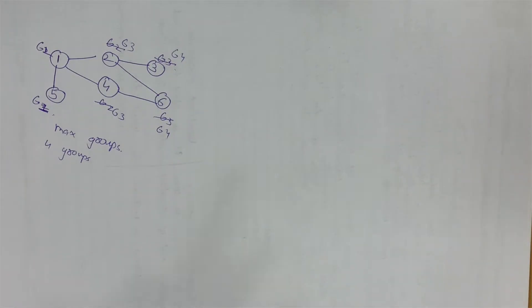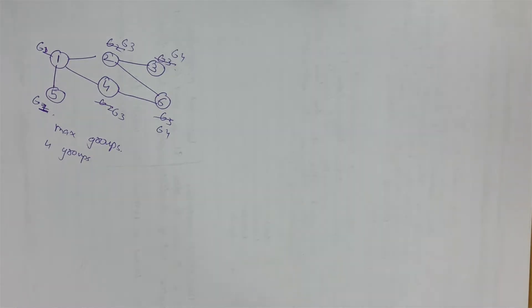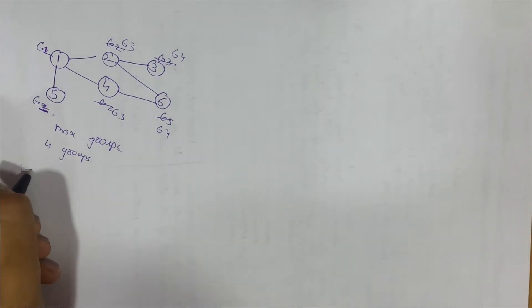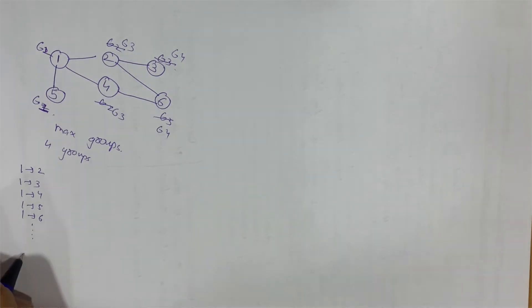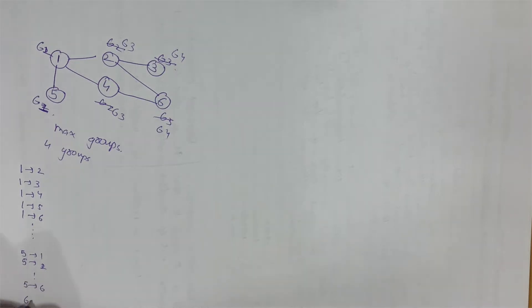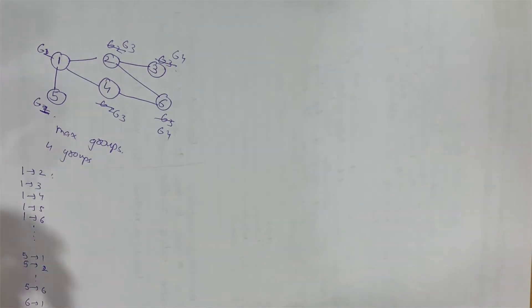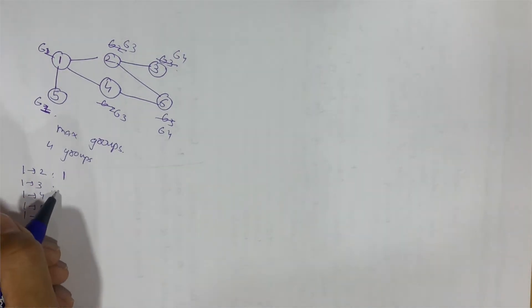The logic here is to find the distances between each node in the component. To determine the maximum number of groups, we find the distances from every node to all other nodes and take the maximum. Each edge counts as distance 1, so from node 1: distance to node 2 is 1, to node 3 is 2, to node 4 is 1.